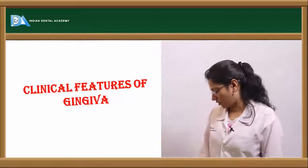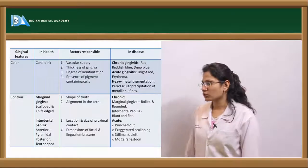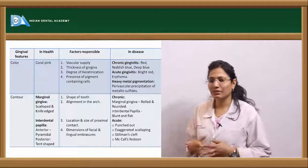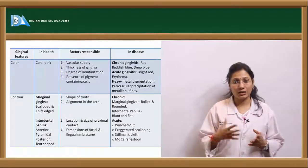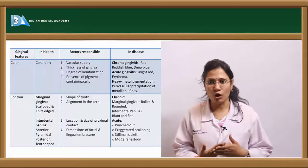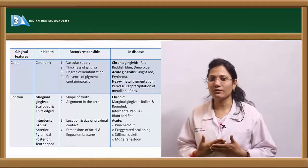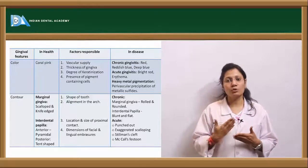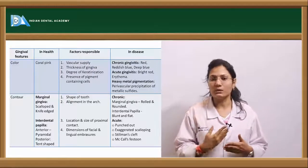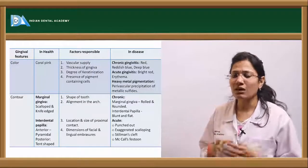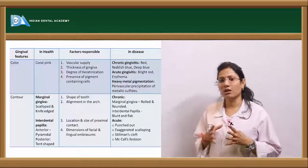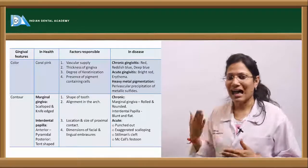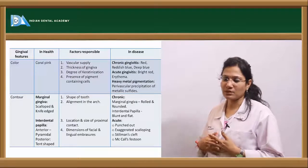The topic is clinical features of gingiva. We can cover it under certain subheadings: color of the gingiva, contour, consistency, surface texture, size, shape, position, and finally bleeding on probing. Let's see what happens in health — the color of the gingiva, the reasons associated with the color, and what happens in pathology.